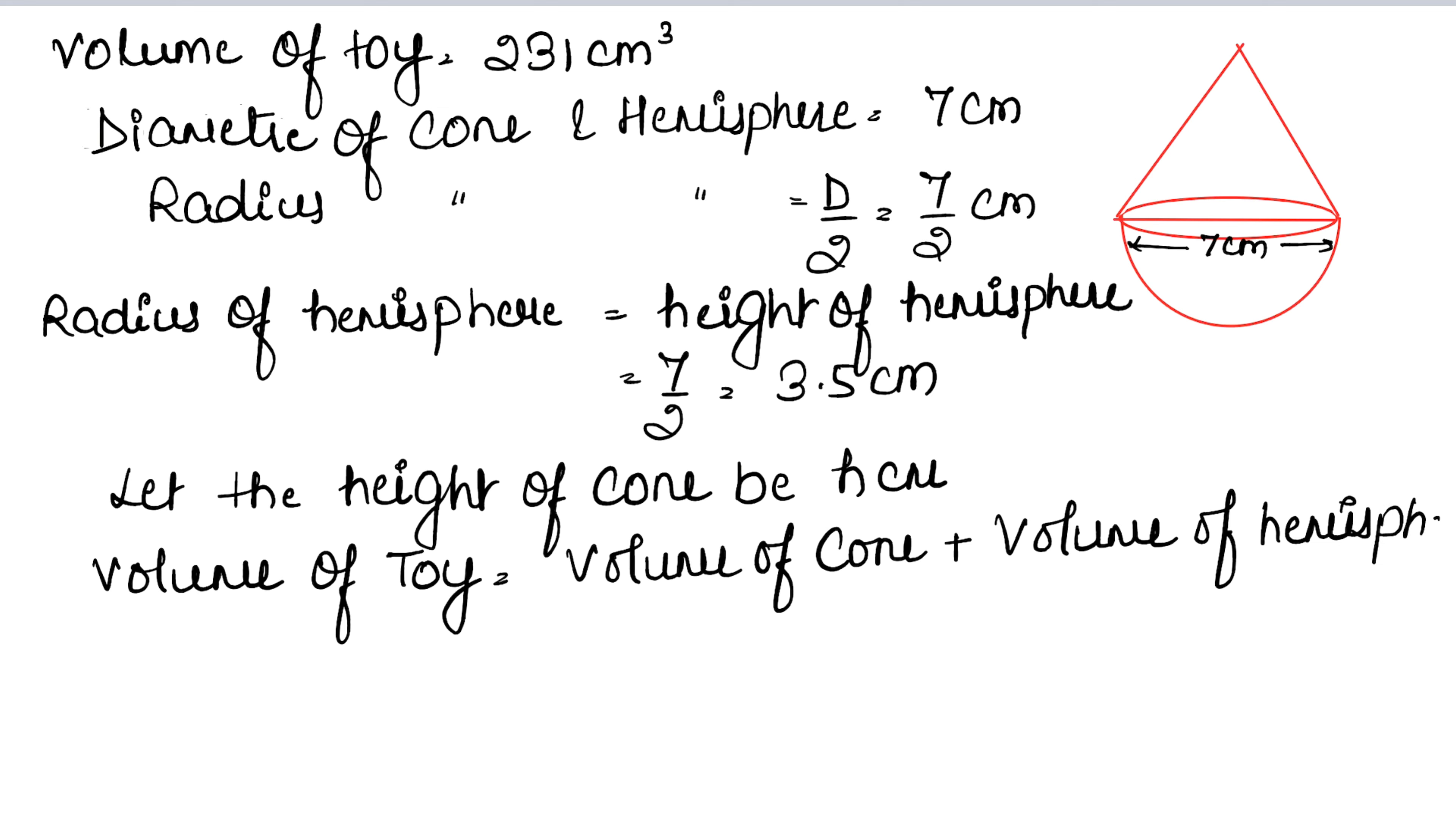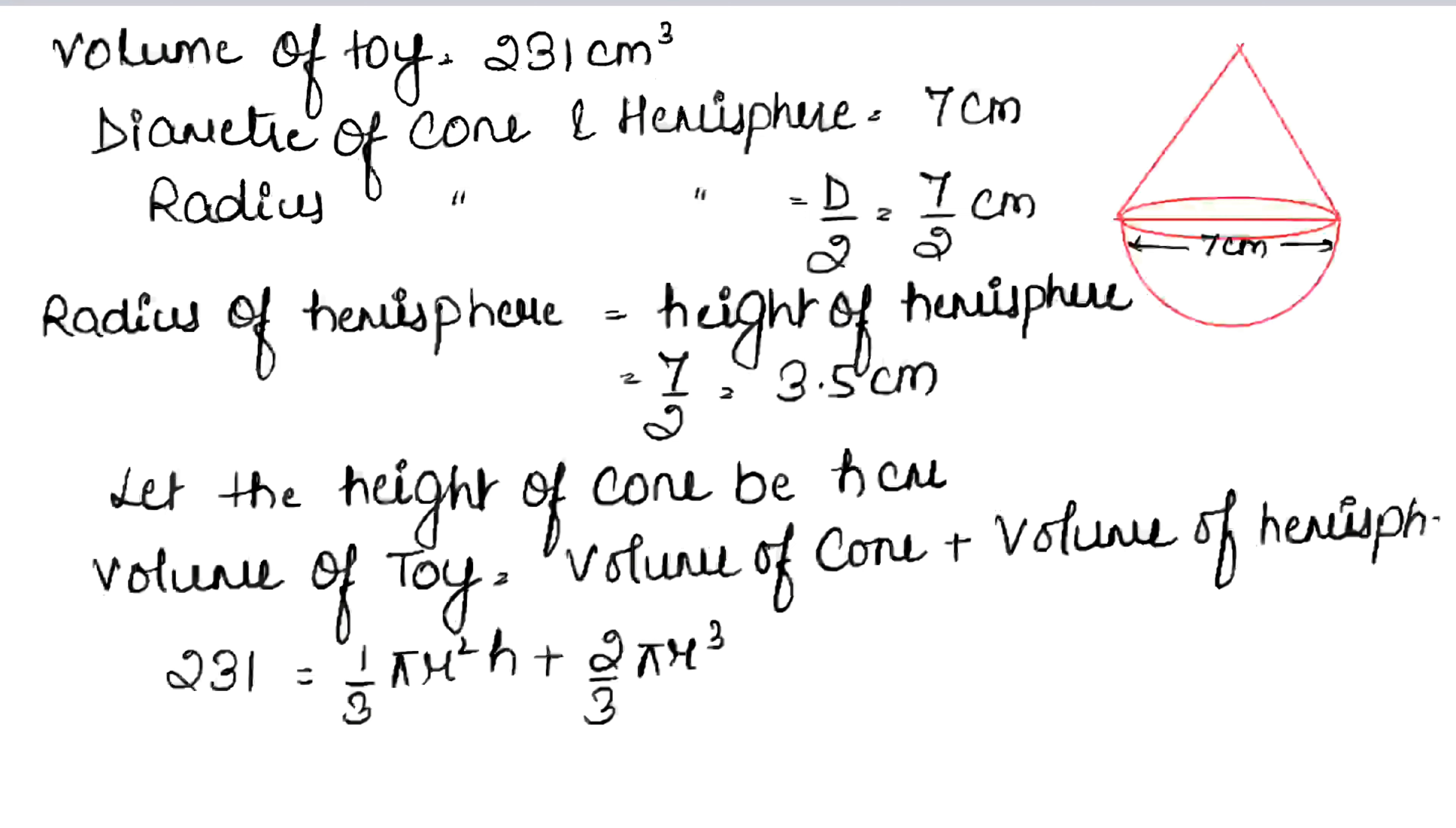So volume of toy is 1/3 π r² h plus volume of hemisphere, that is 2 upon 3 π r³, right. Put values. So this is 231 equals to 1 upon 3 π, value 22 upon 7, r is 7 upon 2.